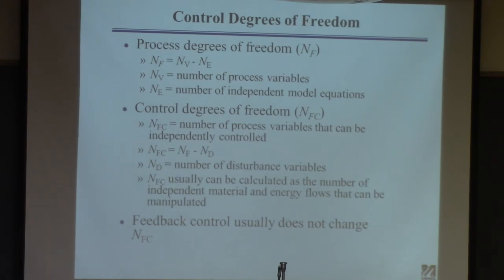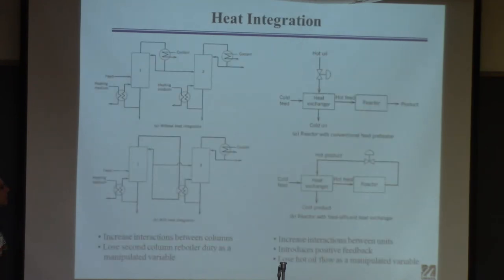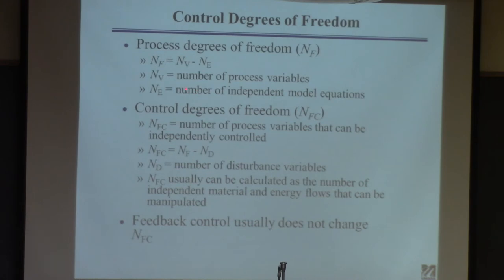This slide gives you an idea about how many variables one can choose — how many independent variables are available to do control. The process degree of freedom is the number of variables minus the number of equations, which should look familiar from solving equations. When you do control, you need degrees of freedom. If you have no degrees of freedom in your plant, you have nothing to manipulate and can't do control. The degrees of freedom can be split into things you can manipulate and things you can't, which we call disturbances.